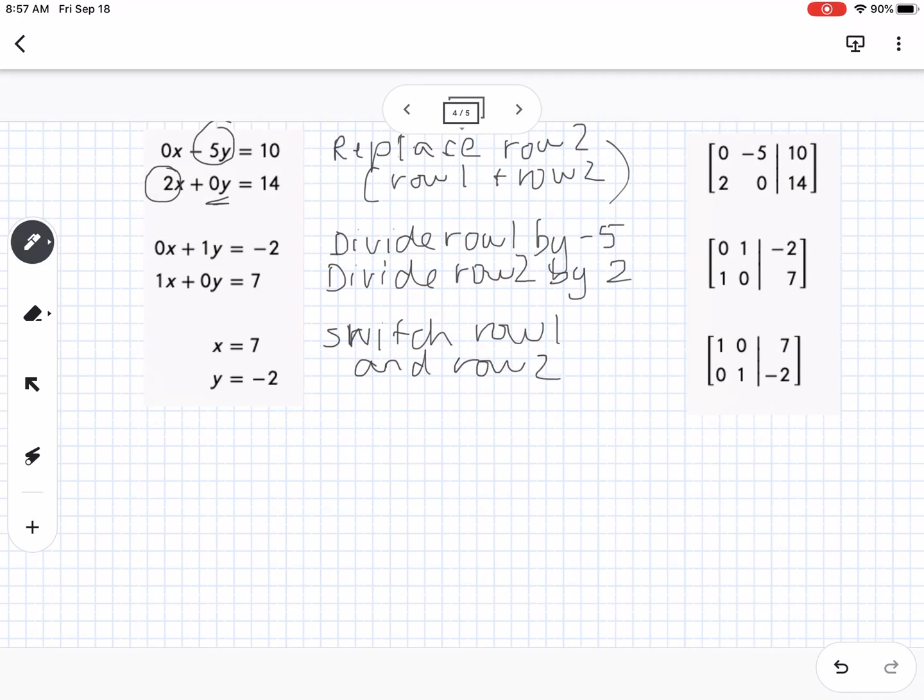These are all things that you're allowed to do. You can multiply rows by a number, you can add rows together and replace a row, you can divide by a number, or you can switch the rows and the orders that they come in. The end result here is this matrix. We know that it's x, y in our constant. When you have zeros in there, that means there's no y and that means there's no x. So we can say x equals 7 and y equals negative 2. That is how you do row operations by hand.